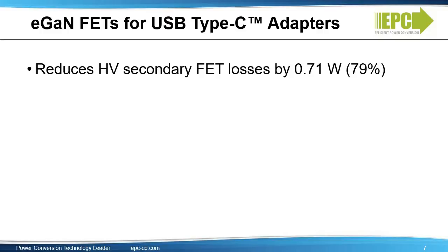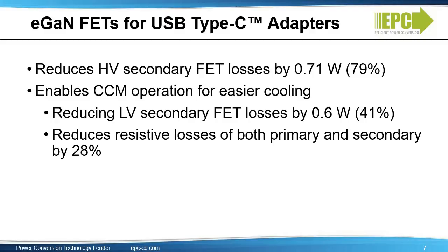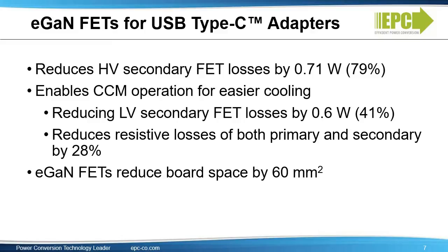To sum up the benefits of using eGaN FETs for USB Type-C adapters: GaN devices reduce high-voltage secondary FET losses by 0.71 watts, or almost 80%. They also enable CCM operation for easier cooling, reducing low-voltage secondary FET losses by 0.6 watts, or more than 40%. They reduce the resistive losses on both the primary and secondary side by 28%. Finally, eGaN FETs reduce board space by 60 square millimeters.